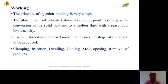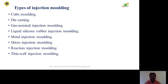The stages of injection molding include clamping, injection, dwelling, cooling, mold opening, and removal of products. Regarding the types of injection molding, the first one is cube molding, and then die casting.